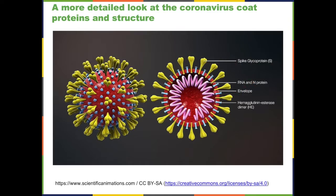The diagram also shows the plasma membrane envelope, the protein that binds to carbohydrates on the cell surface, and the RNA bound to the N protein.